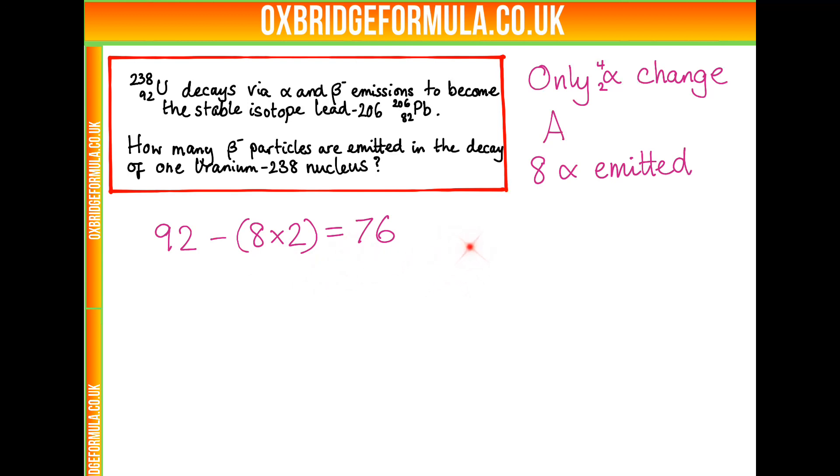We can see there is a discrepancy between this and the 82. Thankfully, the beta-minus particles do not change our atomic number, but they do change the proton number. They increase it by 1. So there must have been 6 beta-minus decays or 6 beta-minus particles emitted so that 76 plus 6 is 82.